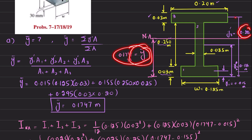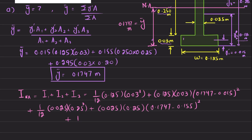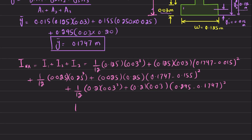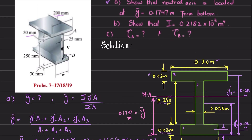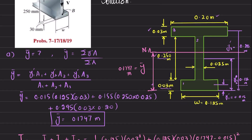For section 3, d₃ = 0.295 − 0.1747. Solving all three terms and summing gives I about the neutral axis = 0.21812 × 10⁻³ m⁴, proving the second part. We now move to part C.